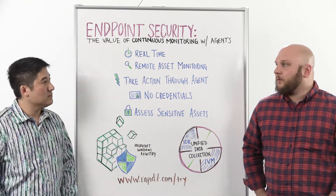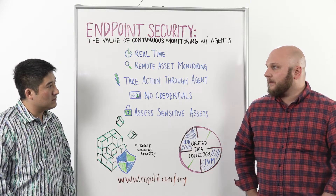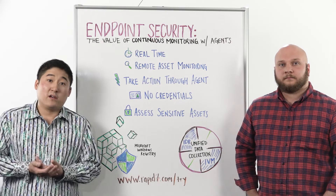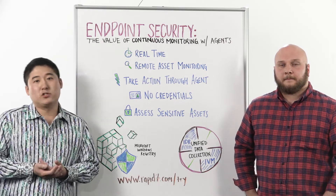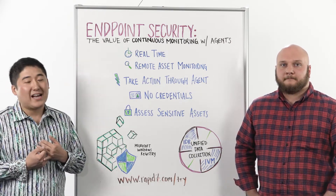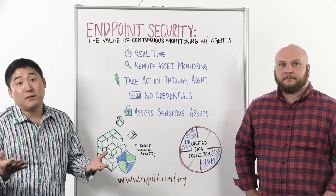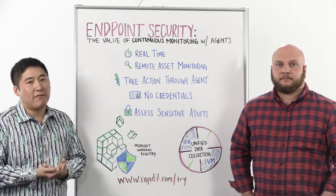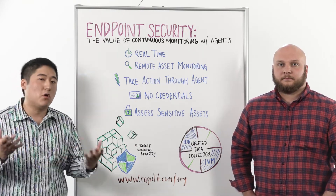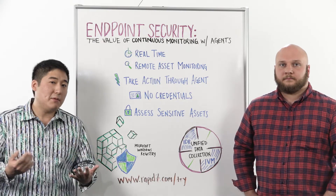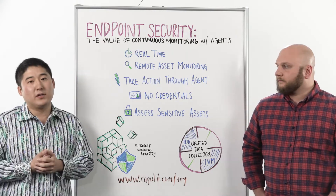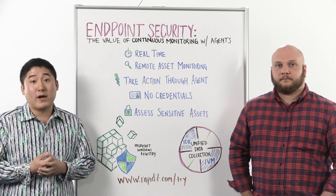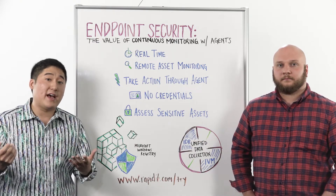So Eric, why do we need agents in today's modern environment? Yeah, so definitely modern is that key component. As global workers, we're traveling around the world, we're accessing the network and critical items from hotels, on the road. So it's important to have coverage for those remote assets. At the same time, it's also important to have real-time coverage so that if there's a compromise on that endpoint, we're able to detect that in real time.